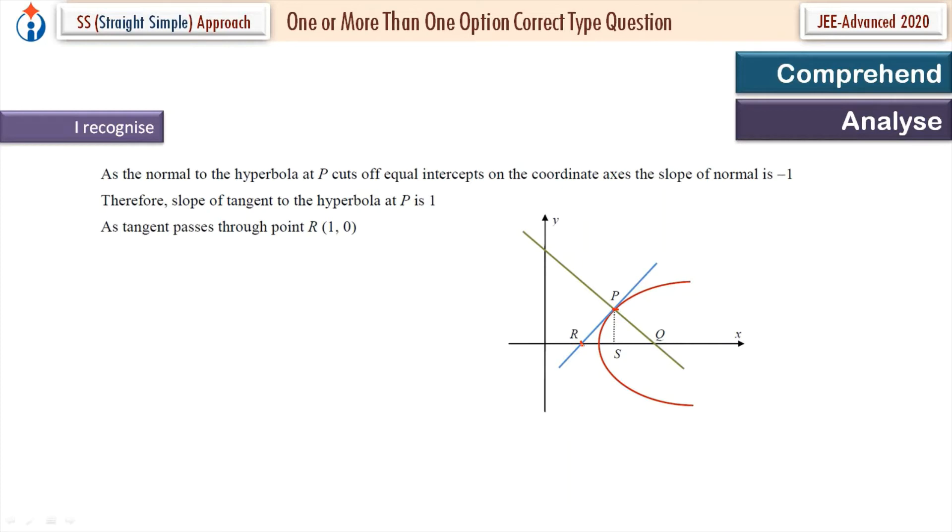So as tangent passes through this, we have this slope of the tangent and a point through which it is passing. So we use point slope formula to find the equation of a line. So equation of tangent is y is equal to x minus 1. All basic results.